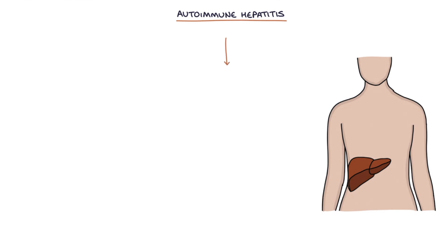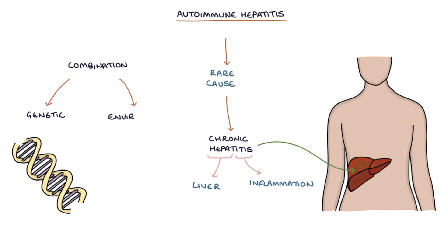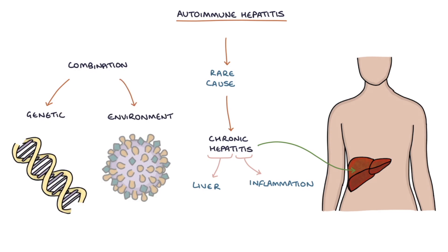Autoimmune hepatitis is a rare cause of chronic hepatitis, or inflammation in the liver. It appears to occur due to a combination of genetic and environmental factors.